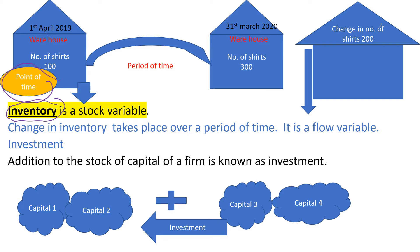Let us assume that a firm which produces shirts has a warehouse. On 1st April 2019, the number of shirts kept in the warehouse is 100. Then we are measuring the stock maintained by the firm on 1st April 2019 as 100 shirts — meaning we are measuring at a point of time. Because of this reason, we call inventory a stock variable.